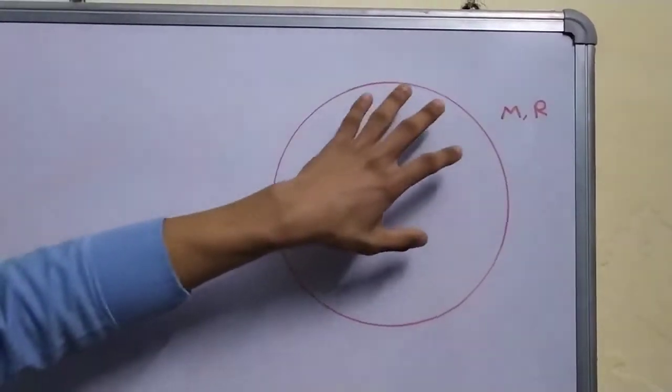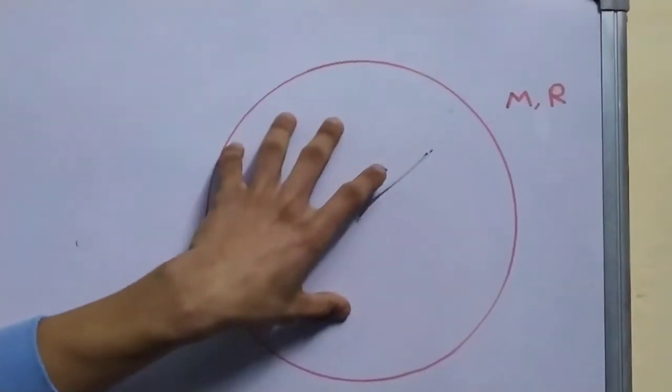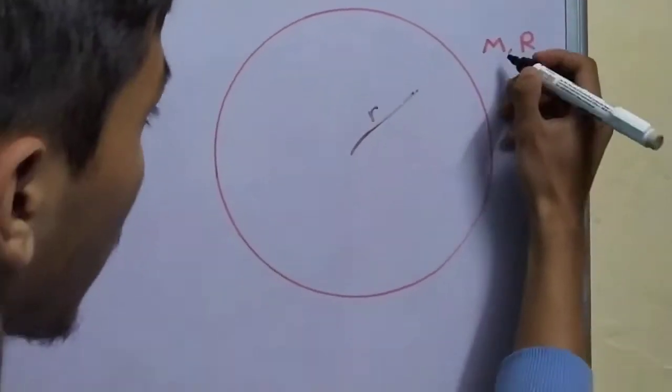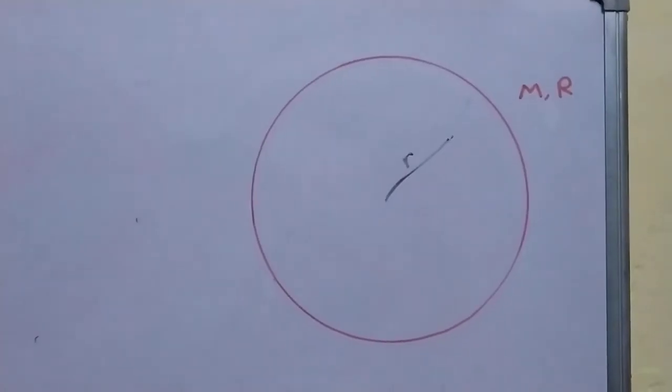Uniform means that the density of this sphere is constant and this solid sphere has a mass m and radius r.